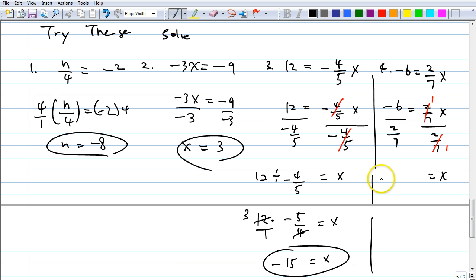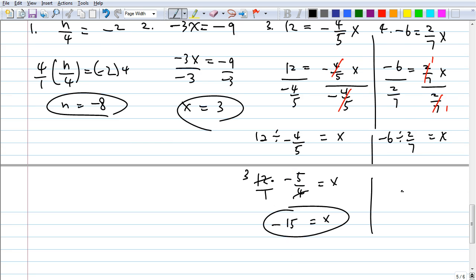What is negative 6 over 2 over 7? It's negative 6 divided by 2 over 7. And so, how do we divide? Negative 6 times the reciprocal of that number, right? Times 7 over 2, equals x.